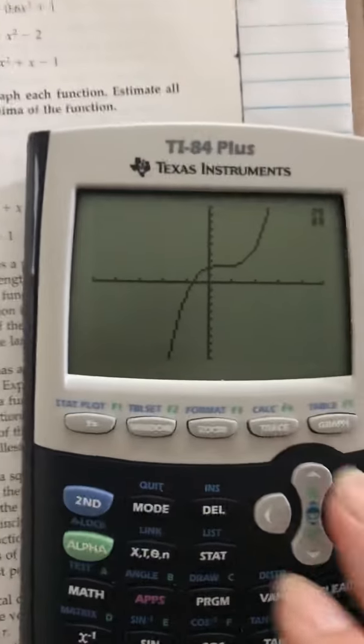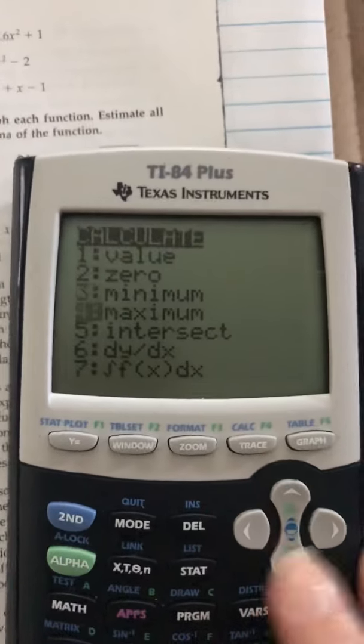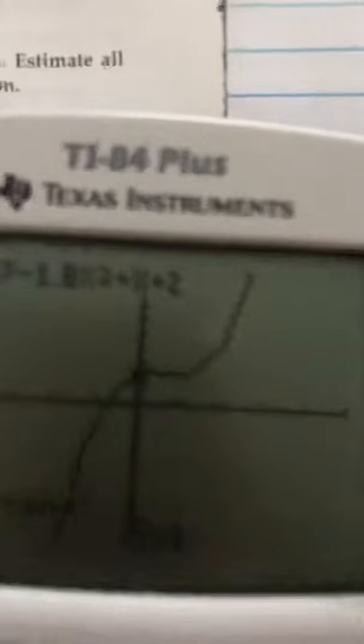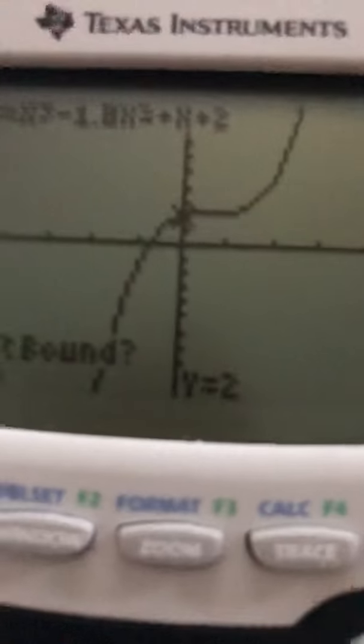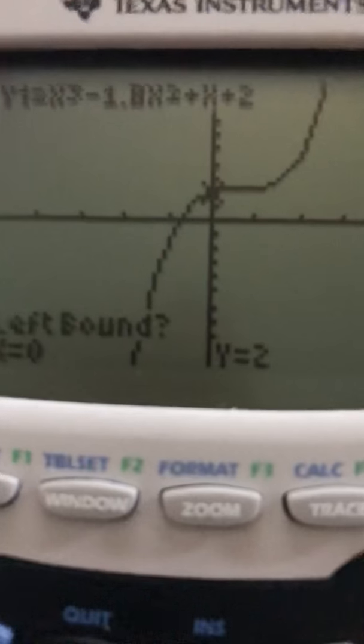So I'm going to do the same thing. Second, trace. My maxes first. So I'm going to go look at my max. Looking at my marker. I'm at y equals 2.